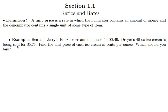Taking my favorite food which is ice cream. So it says Ben & Jerry's 16 ounce ice cream is on sale for $2.40. Dreyer's 48 ounce ice cream is being sold for $5.75. Find the unit price of each ice cream in cents per ounce. And then after that we can say which one we would buy. But first of all, cents per ounce.